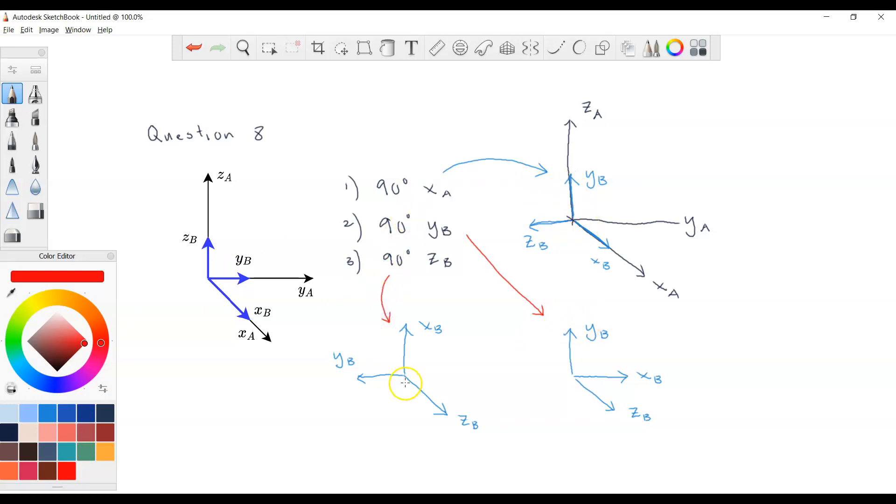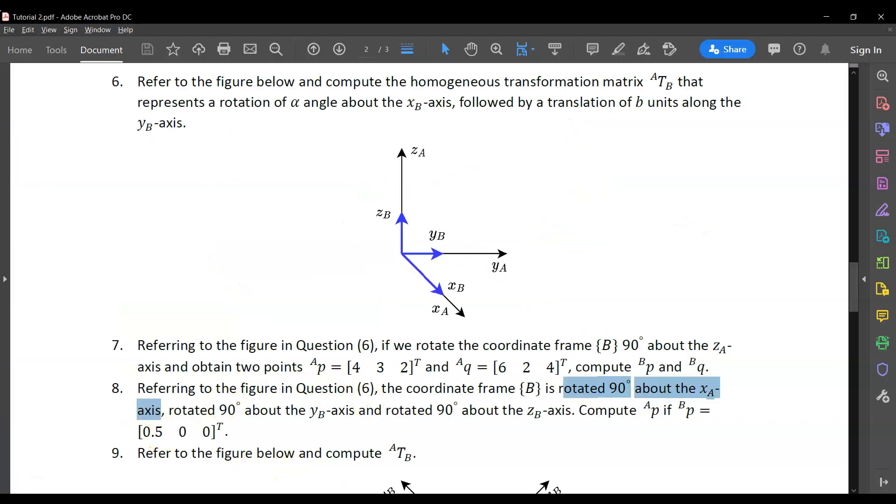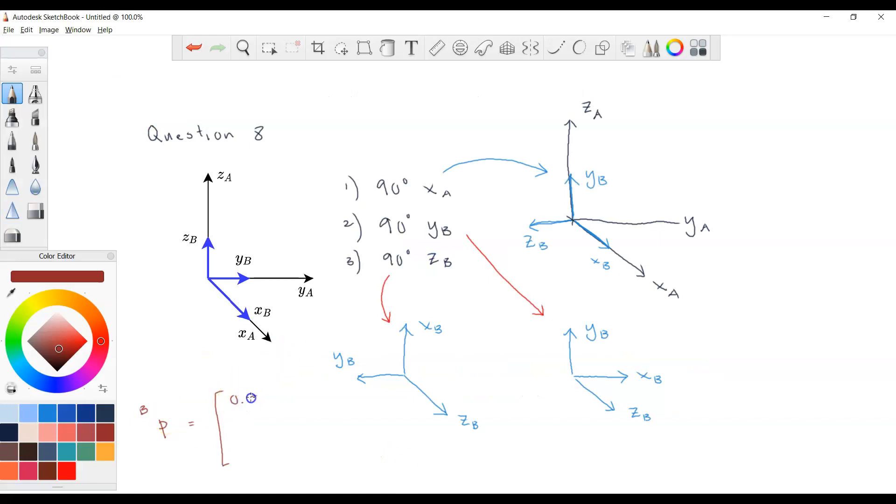So one, two, three. All right. You can check by observation what should be PA. If PB is given to be, what is PB? PB is given to be 0.5, 0, 0. So you can imagine there's a point here. So this is PB. Let's call this PB.